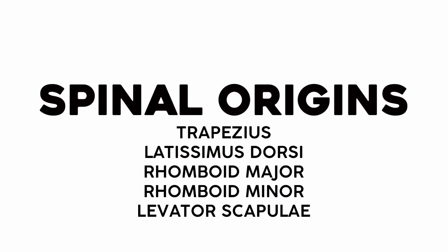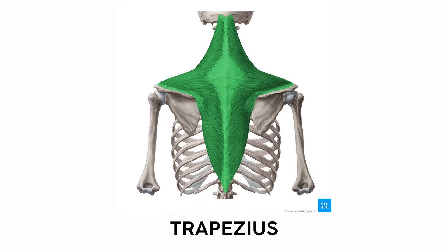A few of the muscles that control movement of the arms start all the way back on the spine. For our first chunk, we'll talk about the muscles that people usually refer to when they say it's back day. The trapezius is this big muscle that inserts on the scapula and clavicle, but originates all the way from the base of the skull to the lowest thoracic vertebrae. Sometimes you'll see this described, especially in the fitness world, as the upper, middle, and lower trap muscles, but it's important to remember that they all make up a single muscle.